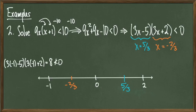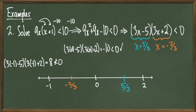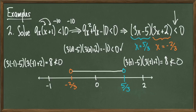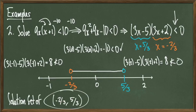Plugging -1 into the factored form gives +8, which is not less than 0, so the region to the left of -2/3 is not wanted. Plugging in 0 gives -10, which is less than 0 — exactly what I want. Plugging in 2 gives +8, also not less than 0. So the portion of the number line between -2/3 and 5/3 is what I want. Since this inequality is strictly less than 0, I use open circles and write the solution as (-2/3, 5/3).